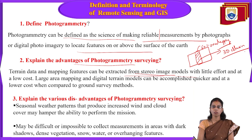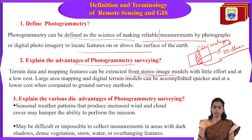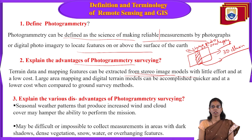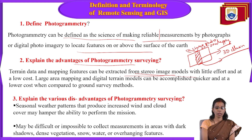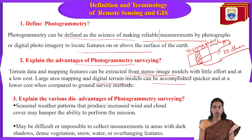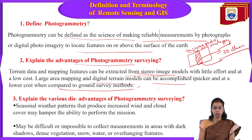That 3D illusion is called a stereo, and the pair of photos producing it is called a stereo photo, giving us stereo vision of the models. Digital terrain models can be accomplished quicker and at lower cost compared to ground survey methods.